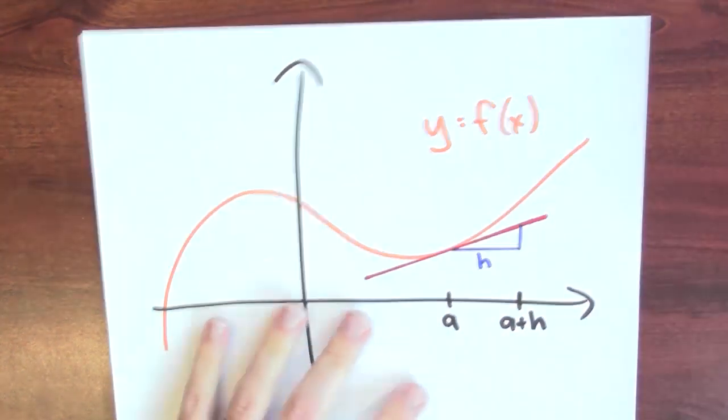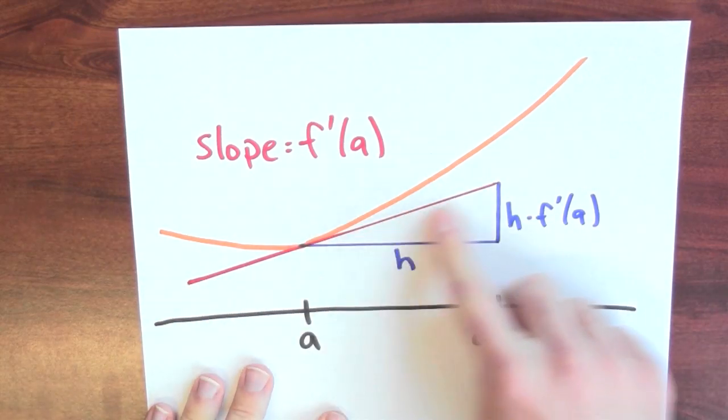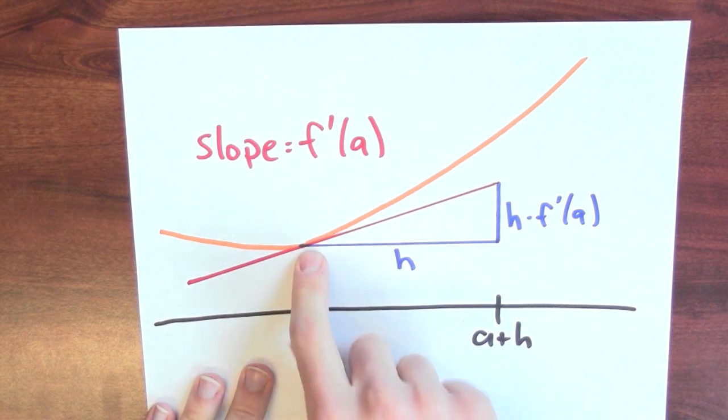Let me zoom in on this picture just a little bit. Here I've got this tangent line and the slope of that tangent line is the derivative of the function at the point a.